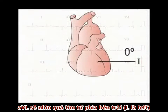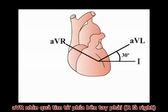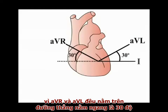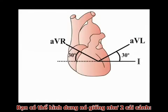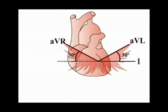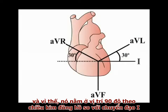AVL looks at the heart from the left — L is for left — but at 30 degrees anti-clockwise, or more to the left if you like, from lead 1. AVR looks at the right side of the heart — R is for right — and just like AVL, it is 30 degrees above the horizontal relative to lead 1. As AVL and AVR are set at 30 degrees off the horizontal plane, you can think of them as the left and right wings of the ECG. AVF looks straight up at the inferior surface of the heart, and is therefore at 90 degrees clockwise from lead 1.